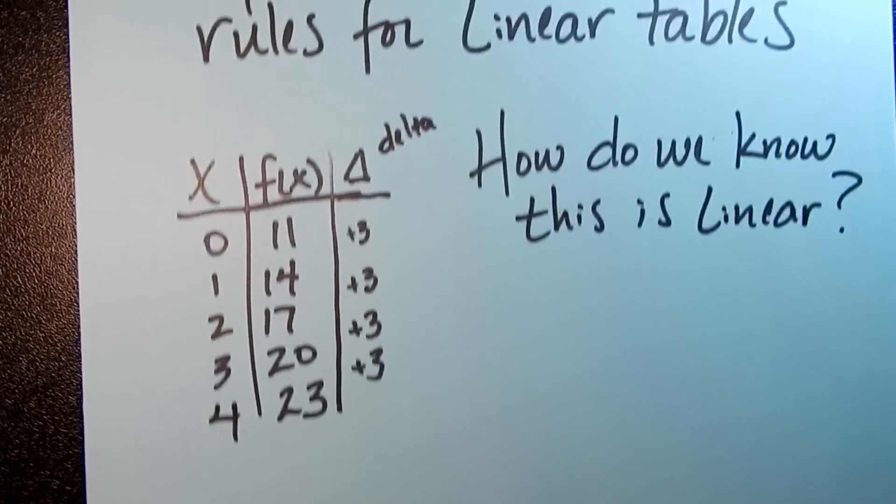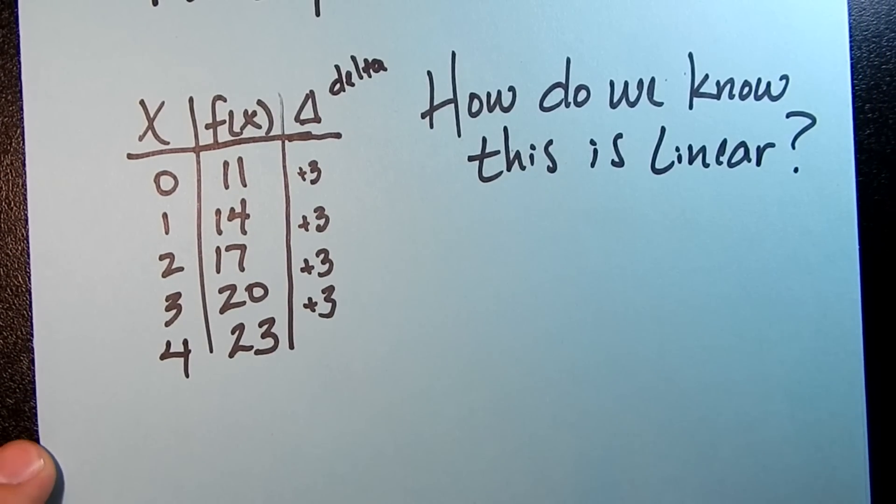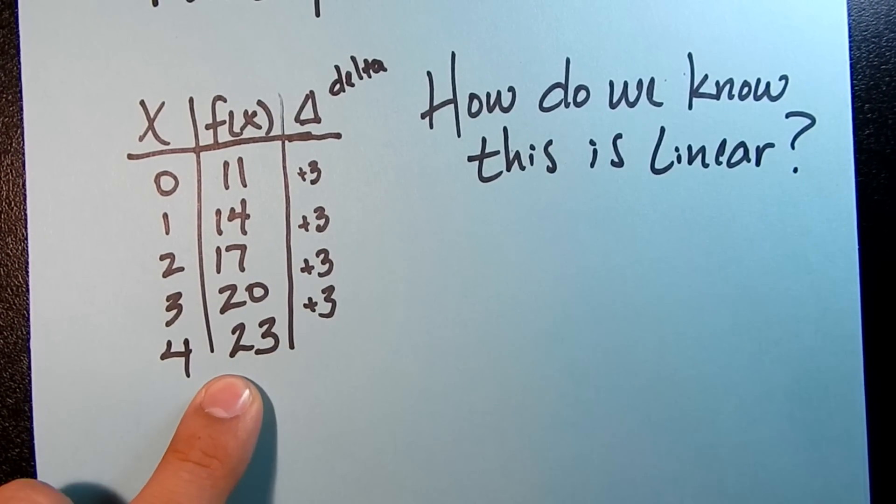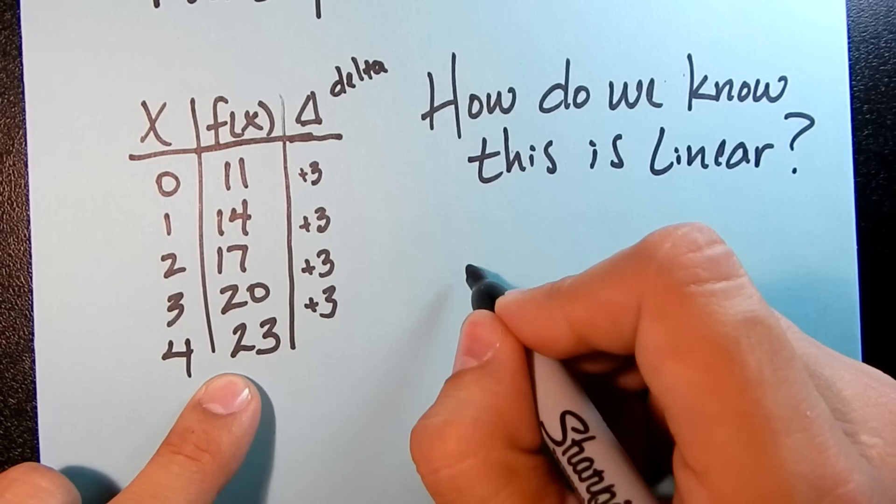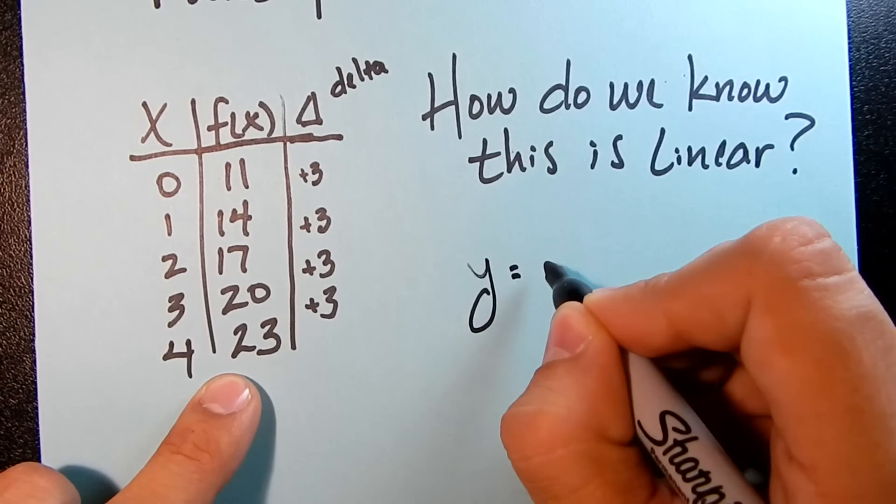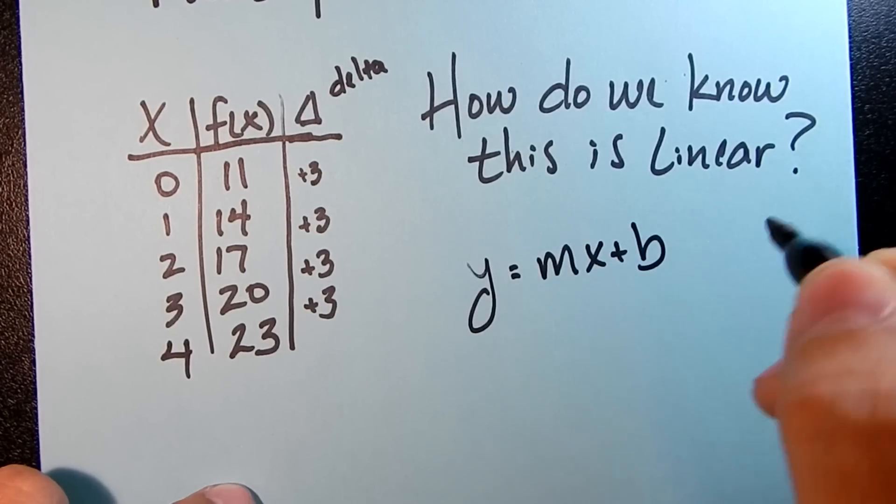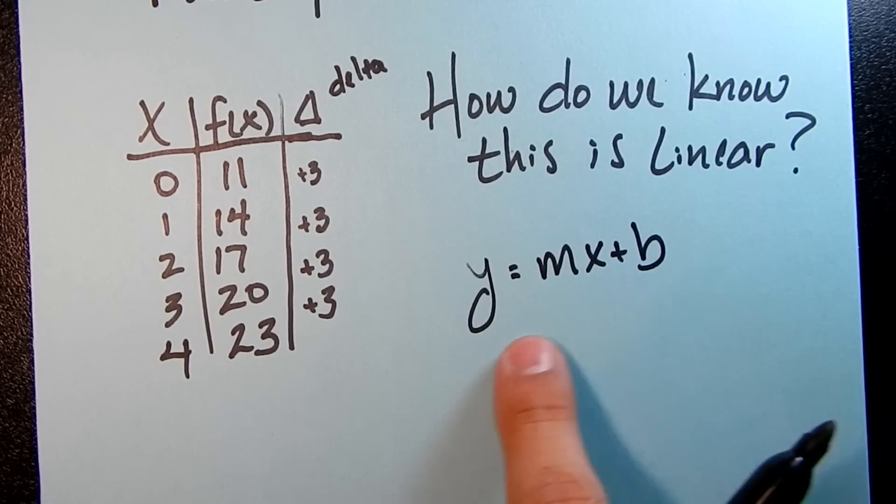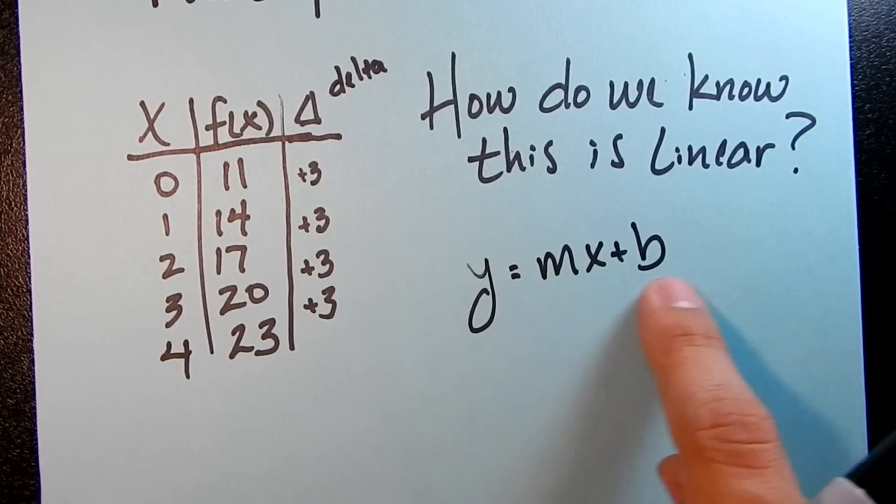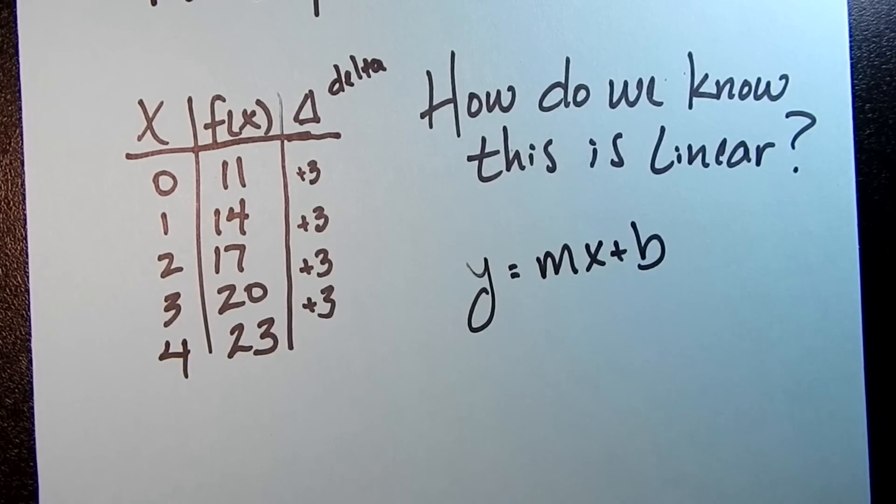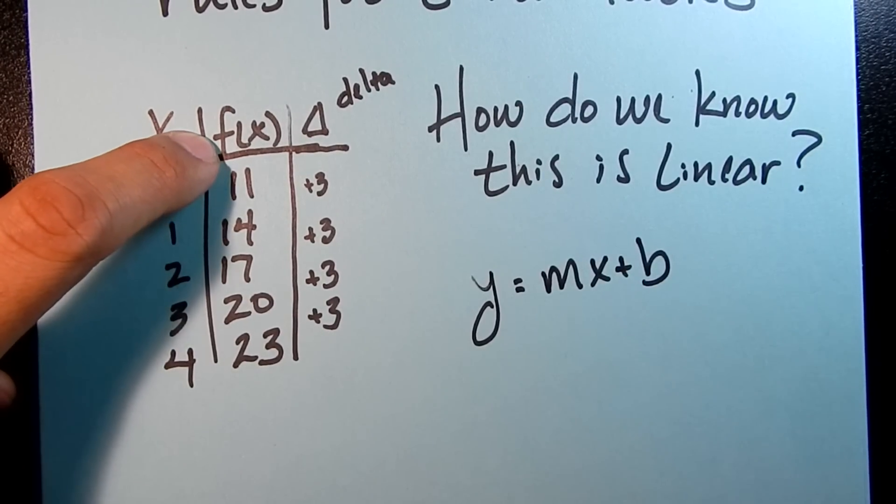The next thing we want to look at are these explicit rules. So an explicit rule for a line, as you might remember from your Algebra 1 days, we think of lines as being y equals mx plus b. That's a fairly common way to think about linear equations, is just slope-intercept form. Now, for us, because we're dealing with functions and function notation, this is going to look a little bit different.